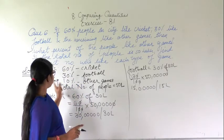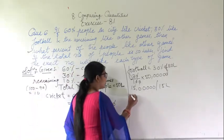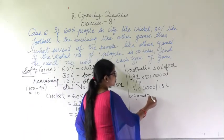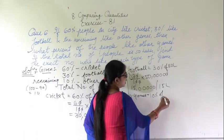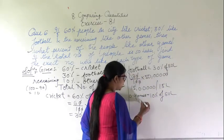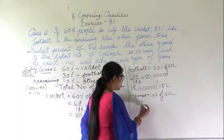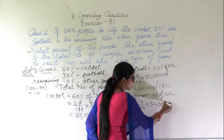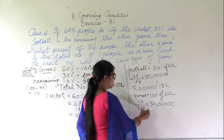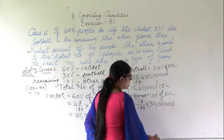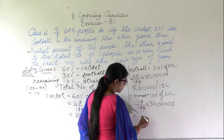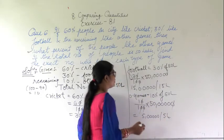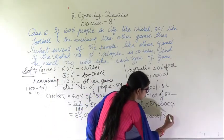For other games: 10% of the total number of people, that is 50 lakh. So 10 upon 100 into 50 lakh. After cancelling the zeros, I remain with 5 lakh. So 5 lakh people like other games.